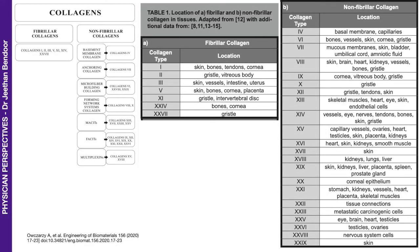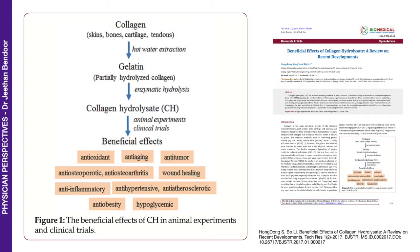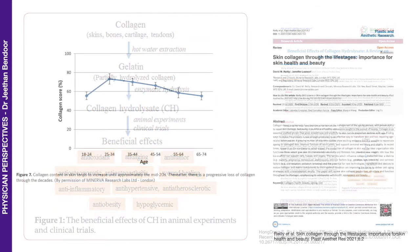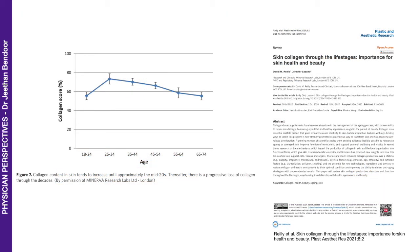Why do we need collagen? All these different tissues have collagen, so we certainly need collagen in abundance. It also has antioxidant, anti-aging, anti-tumor and several other beneficial effects in the body. As we age, the collagen content in our tissues drops. The drop in collagen really depends on how much collagen one has initially and how one maintains that collagen by regular intake of amino acids required for its synthesis.